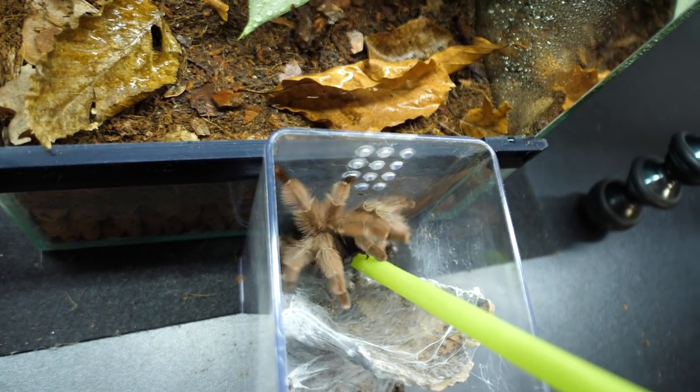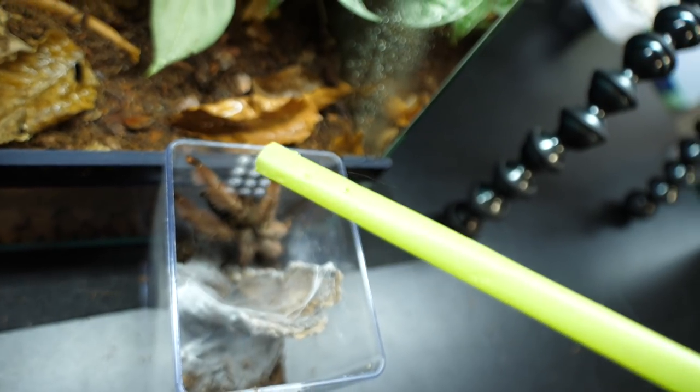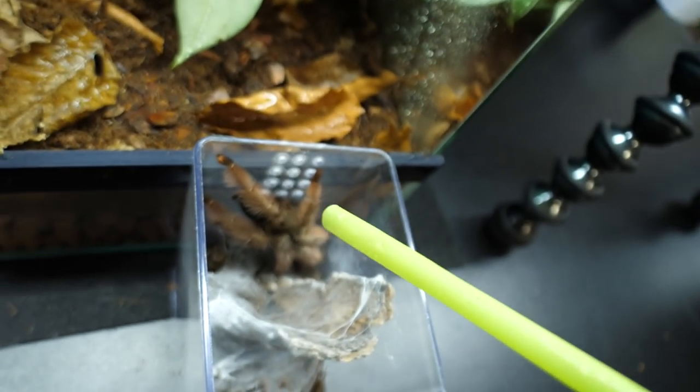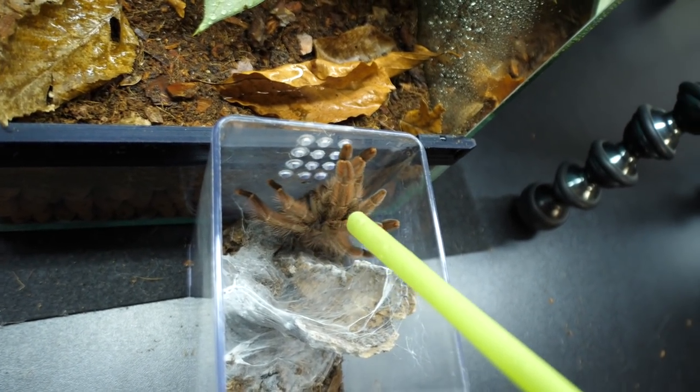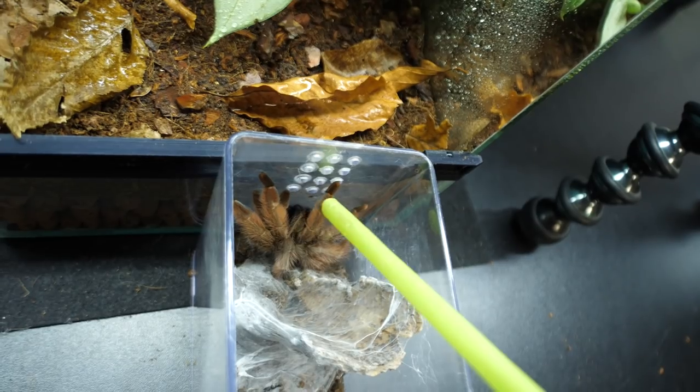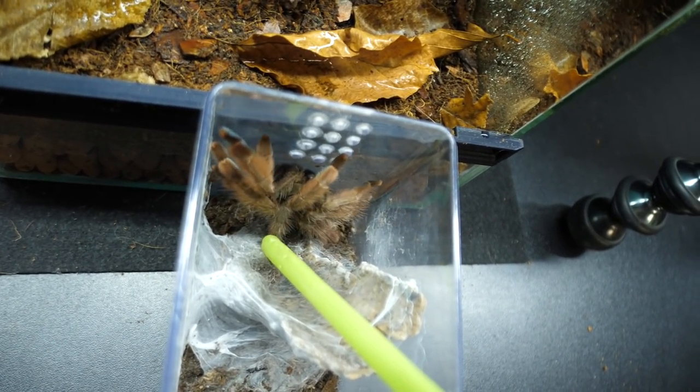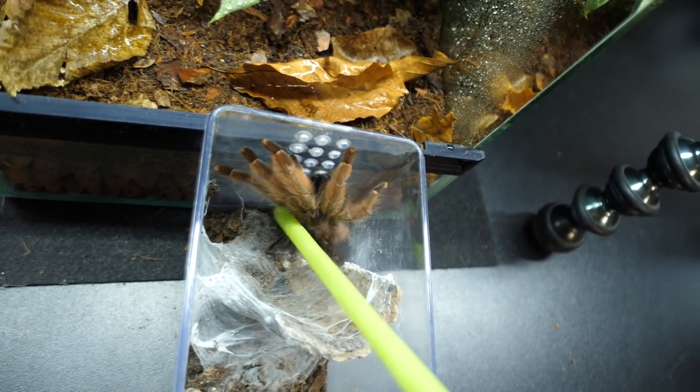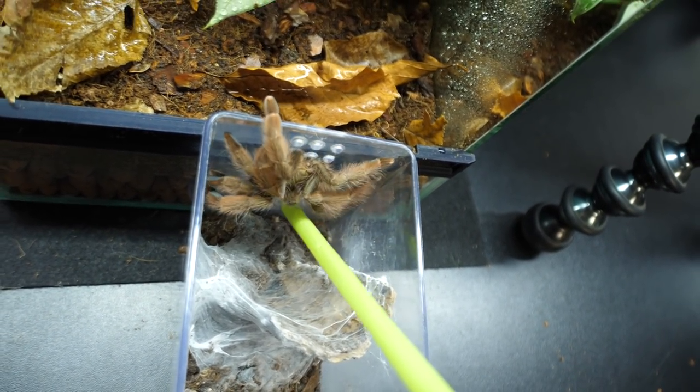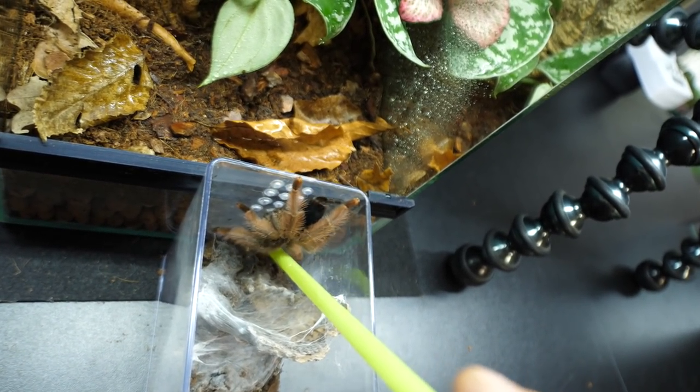And even though Psalmopoeus tarantulas, they are new world. So that means that they have weaker venom. Venom not as strong as old world tarantulas. Tarantulas from Psalmopoeus genus, they don't have urticating hairs. So their only line of defense are those things. And that venom. So therefore. Their venom is stronger than a regular new world tarantula. Like some Brachypelma or Grammostola. And you have seen that they are more bitey than other new world tarantulas.